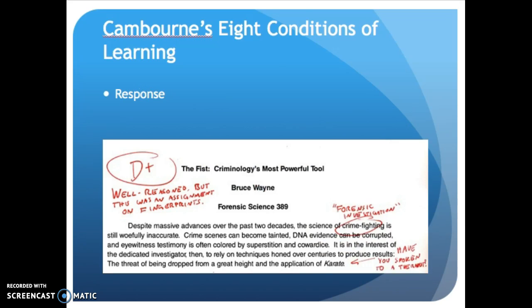The next condition is response. The learner will receive feedback about their use of the skill. Keep in mind that this almost always occurs outside of the library instruction session, via other instructors — we don't get to evaluate their research ability, but their instructor will once they receive the project or paper.